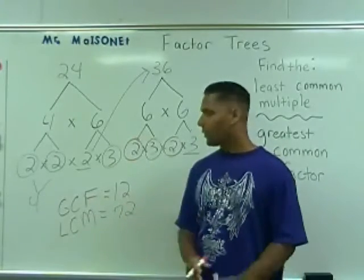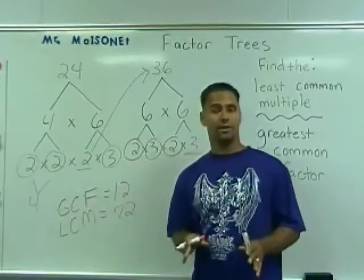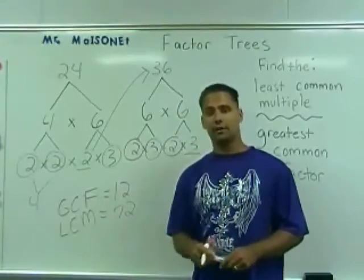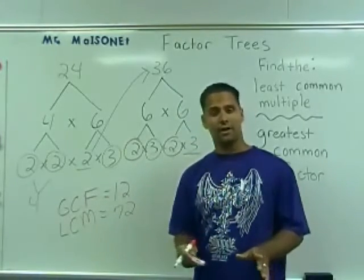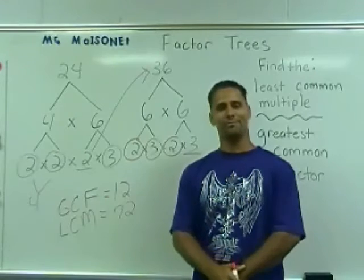So whenever performing a prime factorization of any two given numbers, not only can you find the greatest common factor, but you can also find the least common multiple.